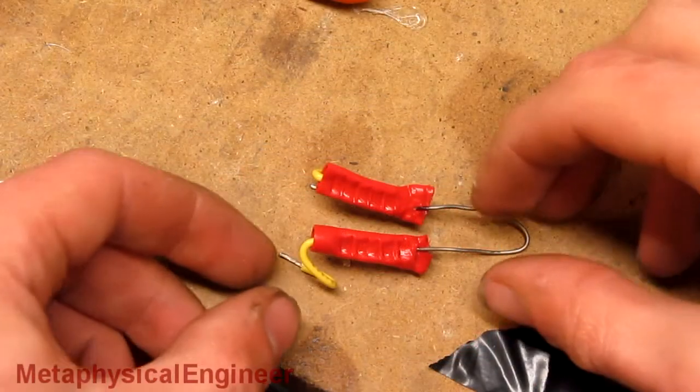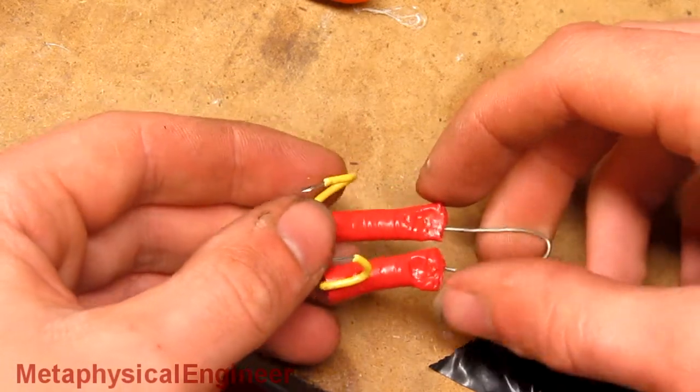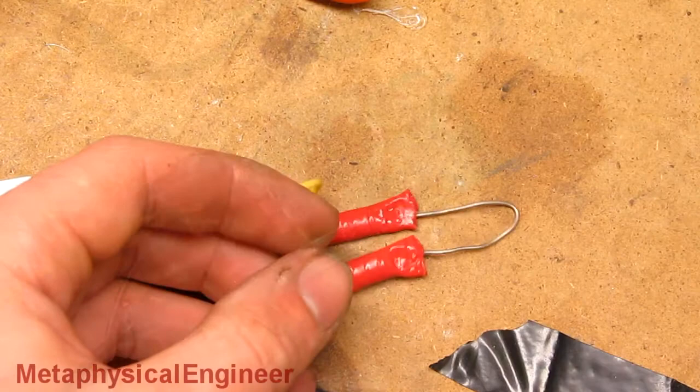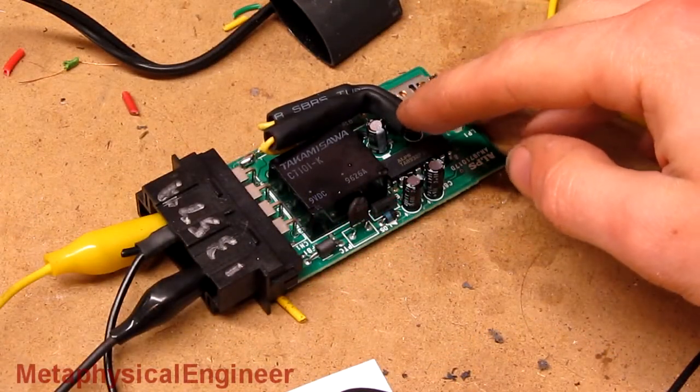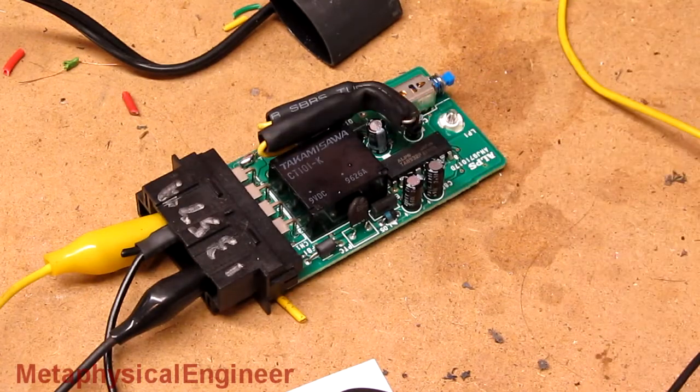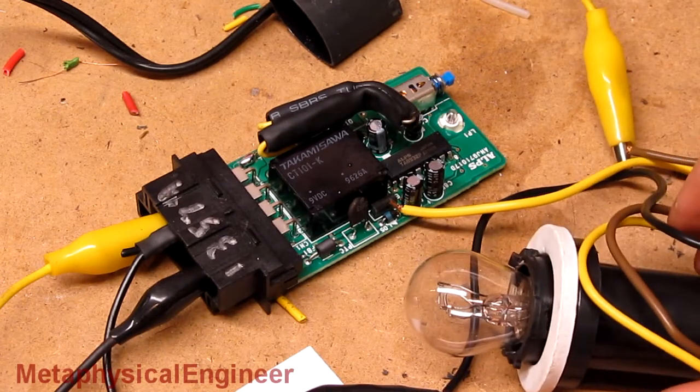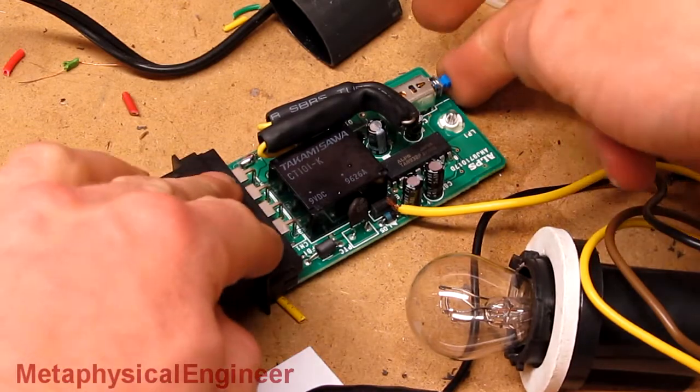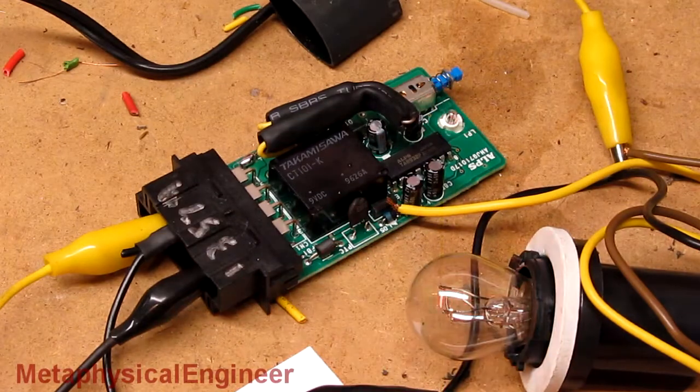Because soldering to nichrome is difficult, I used these crimp butt connectors to attach two little leads to the nichrome resistor. Got the nichrome wrapped up in heatshrink so it can't short to itself or anything else. If I did everything right, it should make this lightbulb flash at the normal rate. Here we go. That is working.